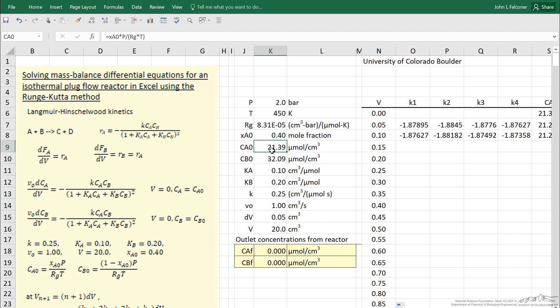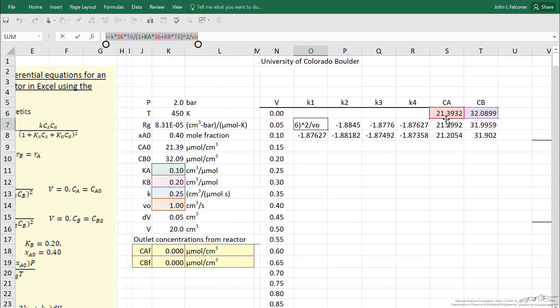If I click okay, then it named each of these cells. So it named this one CA0, and that makes it easier in my calculation. You'll notice I have up here in the formula I have K, KA, KB, and V0. And then S6 is the concentration of A.